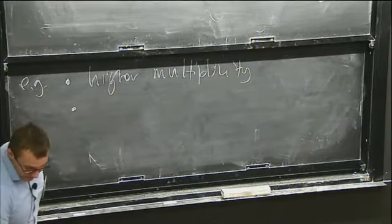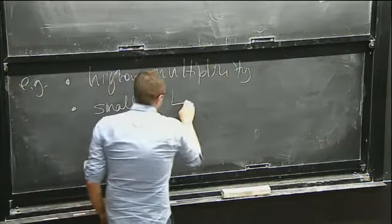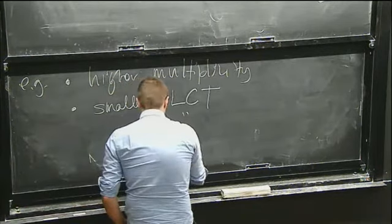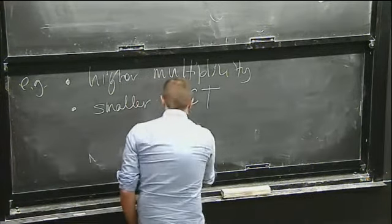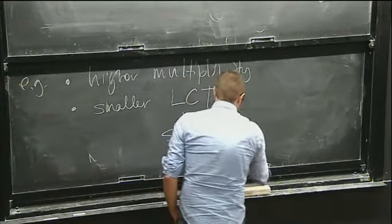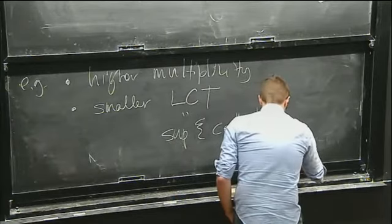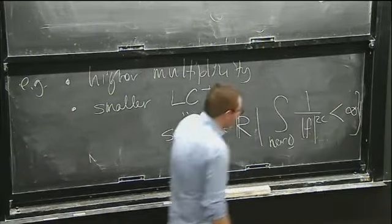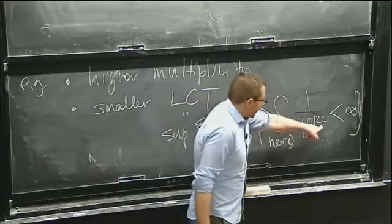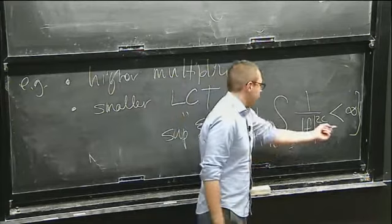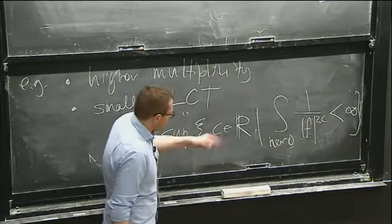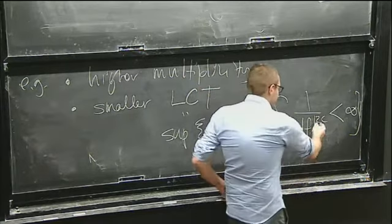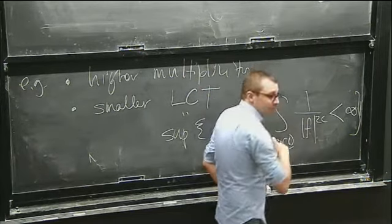Similarly, we said that if you have a smaller log canonical threshold — this was the minimum of them — if I look at the kernel 1/|f|^{2c} and ask when that is locally integrable near the origin, I take the supremum over all such c's and that's the log canonical threshold. The idea is that if f is vanishing faster near the origin, you need a smaller value of c in order to make this thing not explode so badly.